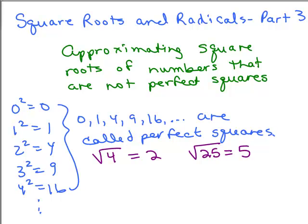The problem is, what do you do with the square root of, let's say, 19? The first thing is to note that 19 is not a perfect square because there's no whole number that when you multiply it by itself you're going to get 19. If it's not a whole number under the radical, it means it's not rational — we'd say this is an irrational number.